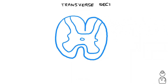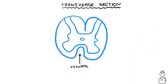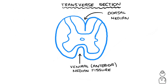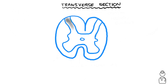So this is what we would see on a transverse section. The indent over here is known as the ventral or anterior median fissure, and the dip at the back is known as the dorsal median sulcus. The middle bit, that kind of looks like a butterfly, is known as the grey matter of the spinal cord.